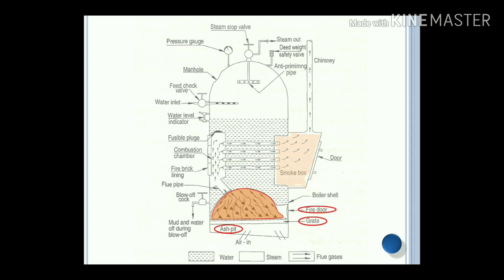Smoke box: after generating the hot gases, they pass through the fire brick lining and inside the tubes, and heat exchange takes place from inside the tubes to the surrounding water. With the heat exchange, water is heated up to a certain limit and it will produce high-pressure, high-temperature steam. With the help of the smoke box, waste gas is collected and directed towards the chimney.